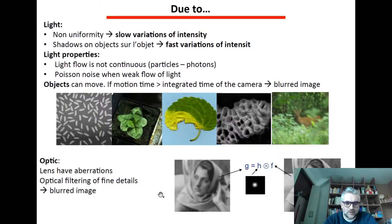Also distortion can come from optic, lens aberration, we have already told this, and optical filtering of fine details will be a consequence of this aberration. The optical passing through optics corresponds to a convolution that will somehow blur a bit.